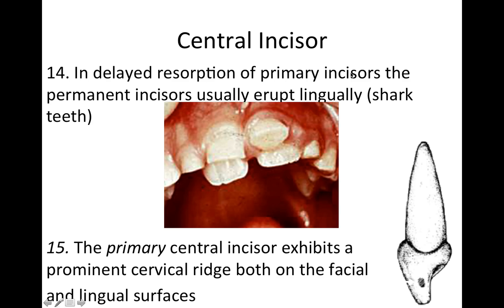In delayed resorption of primary incisors, the permanent incisors usually erupt lingually — this is where you get the shark teeth coming in. In this picture we've got the primary teeth and the centrals erupting in back, but due to delayed resorption of the primary incisor roots they've erupted lingually. Ideally the teeth would erupt on top of the primaries, resorbing the roots and the tooth would fall out. The primary central incisor also exhibits a prominent cervical ridge both on the facial and lingual — it just juts out on both the facial and the lingual.